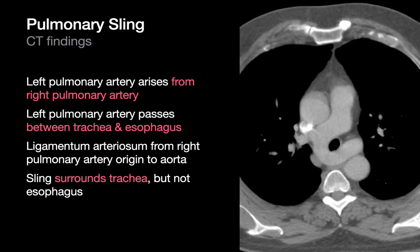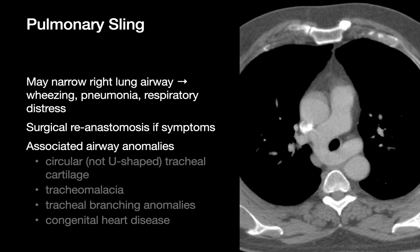Pulmonary slings are an anatomic variant where the left pulmonary artery arises from the right pulmonary artery instead of the main pulmonary artery. In these people, the left pulmonary artery wraps around the trachea, passing between the trachea and esophagus before heading to the left lung. This course results in a vascular ring that can compress the lower trachea and right main stem bronchus and sometimes cause symptoms requiring surgery. A couple of airway anomalies in congenital heart disease are known to be associated with pulmonary sling, so it's a good idea to take a second look at the patient's heart and trachea.